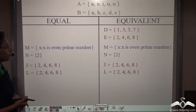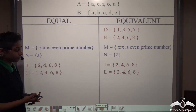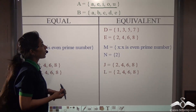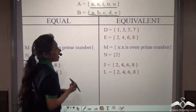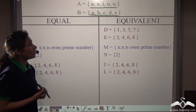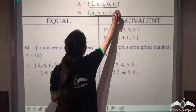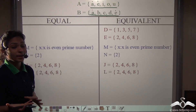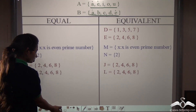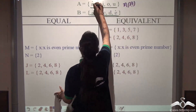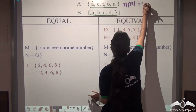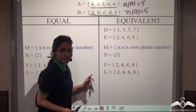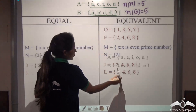Another example: set A is the vowels of the English alphabet — A, E, I, O, U — and set B is the first 5 alphabets — A, B, C, D, E. They have some common elements like A and E, but not all elements are the same, so they cannot be equal. What about being equivalent? Cardinal number of A is 5 and cardinal number of B is 5. Their cardinal numbers are the same, so they are equivalent.